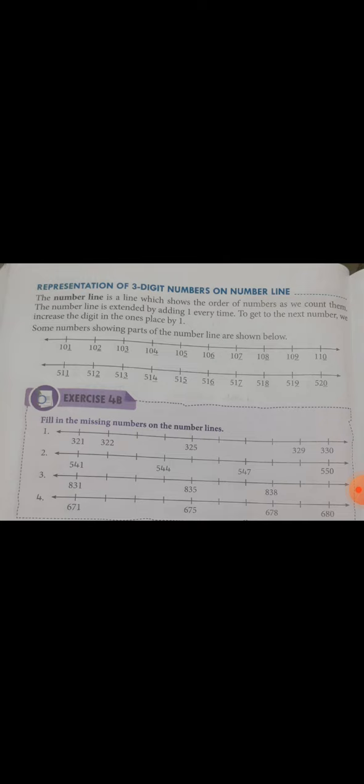Here in class 2 you are learning how you can represent the numbers on a number line. And it increases 1 by 1, only adding 1 every time. But when you are reaching to the higher classes, you are coming to the skipping number.